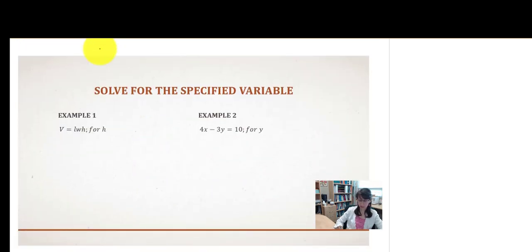In our first example, you might recognize V equals LWH. That's volume equals length times width times height. And the way this literal equation is given, it is solving for volume. We would like to rearrange this and solve for one of the different variables, and that would be for height.